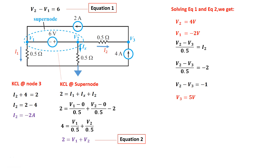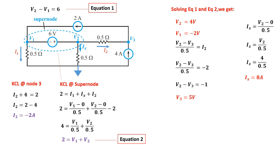Now Ix, the other quantity we were asked to find. Ix goes from V2 towards ground through 0.5 ohms, so Ix equals V2 divided by 0.5. V2 is 4 volts, so 4 divided by 0.5 equals 8 amps. The key takeaway is that applying the node voltage method with a super node isn't more complicated — in fact, the super node immediately gives you an expression like V2 minus V1 equals the source magnitude, and KCL applies to a super node just like a regular node.